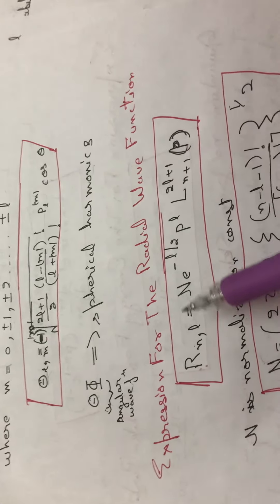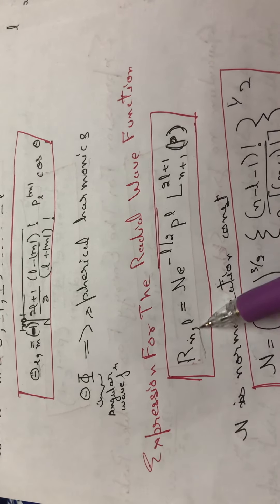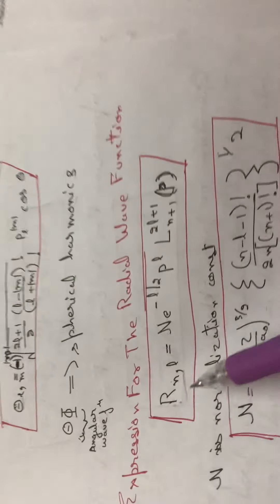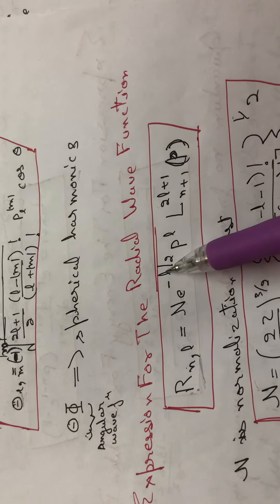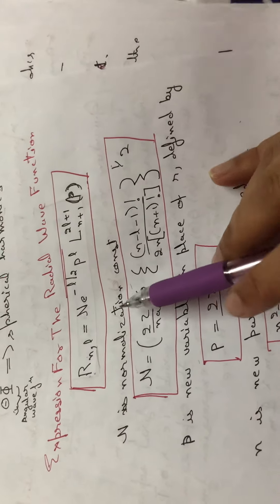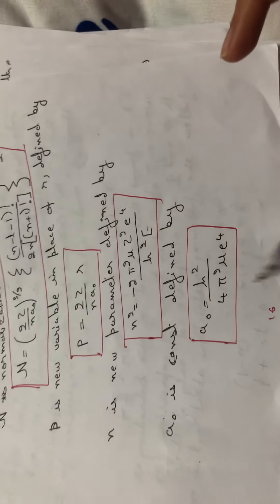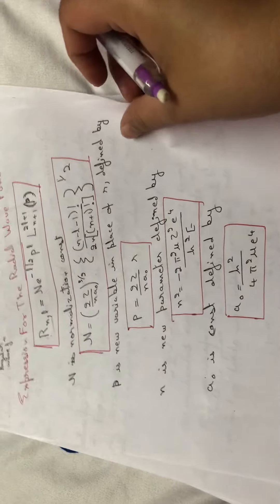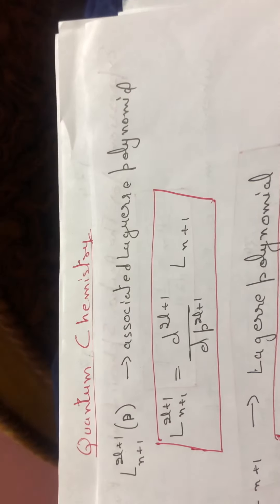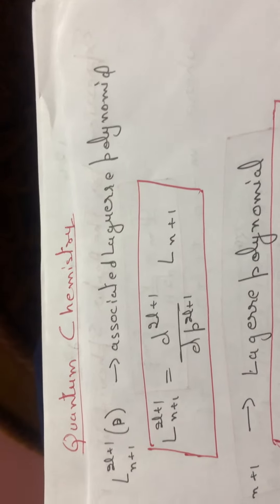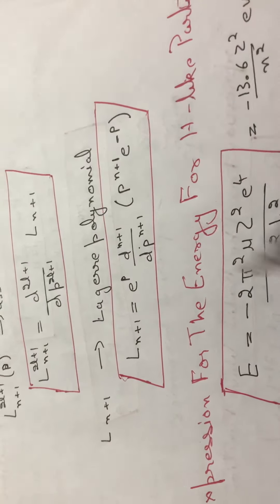The expression for the radial wave function R: the radial part R equals N · ρ^(n−l) · e^(−ρ/2) · ... where N is the normalization constant given by a specific formula, ρ is defined accordingly, a is a constant defined separately, and L is the associated Laguerre polynomial.